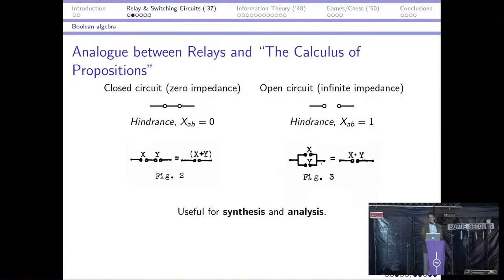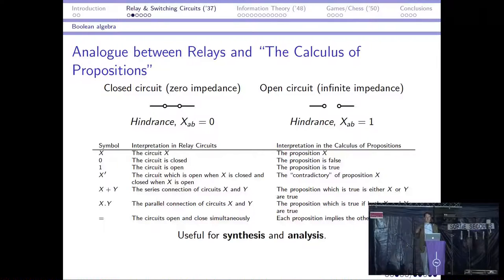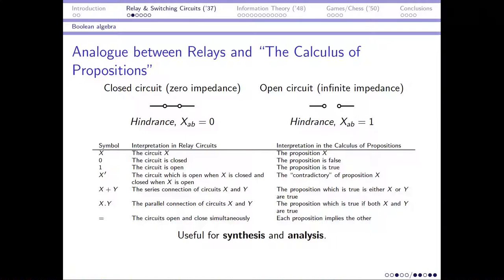And what he did was he took a closed relay and an open relay and said that, well, this looks a lot like the two states that exist in this algebra, the zero and the one. And he developed mappings between doing things with the relays, for example, putting them in series, which looks a lot like the oring operation in this algebra, and putting them in parallel, which looks a lot like the anding operation in this algebra. And he developed this series of links between what we today call propositional logic and the interpretation in relay circuits that could be really used in synthesis and analysis of very complicated mechanisms.